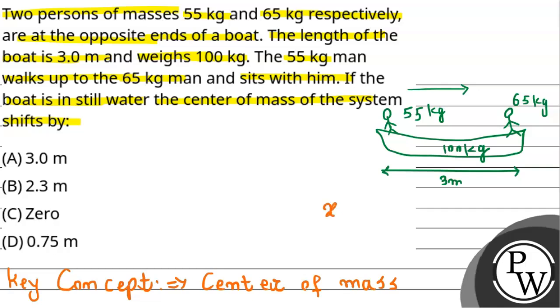In terms of formula, the x-coordinate of center of mass, X_cm, equals m1*x1 plus m2*x2 divided by m1 plus m2, where m1 and m2 are the masses and x1 and x2 are the coordinates from the point of center of mass.